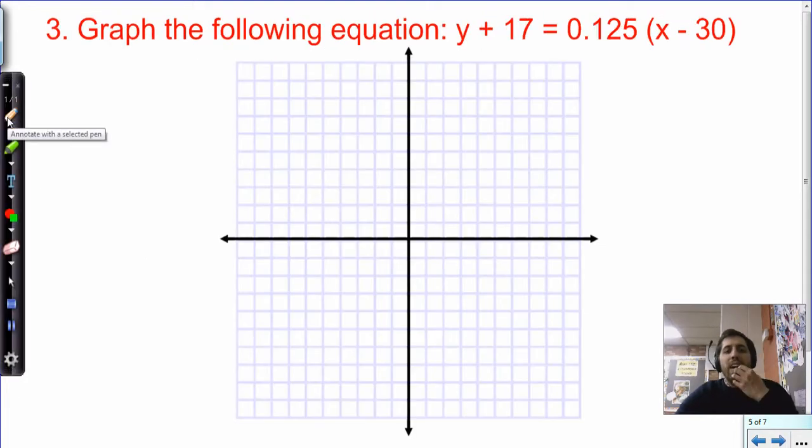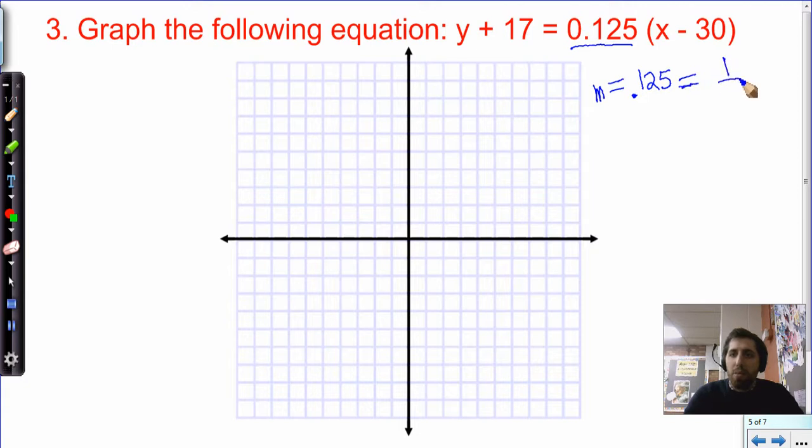This last one says, graph the following equation. y plus 17 equals 0.125, 125 thousandths times x minus 30. Okay, so what's the first thing we know? We recognize, oh, this is point-slope form. And usually the parenthetical gives it away, your addition or subtraction with each variable gives it away, too. But I know that this number in front of the parenthetical, that's my slope. So I can right away pick out my slope as 0.125. And because I paid attention and studied hard in 7th grade math and I had an awesome teacher, I know that's the same as 1 eighth. So this slope is 1 eighth.